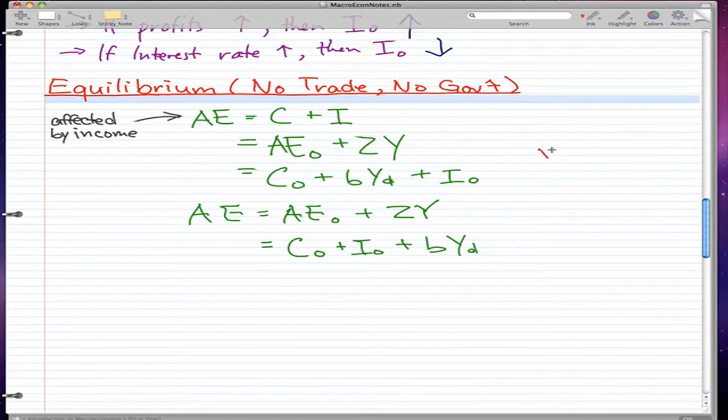Since we have no government, no trade, we can essentially make it so that YD is equal to all our income. Because there's no government, no trade, that means there's no taxes. So taxes are zero. Everything that we make is our disposable income, and that is because there is no government.